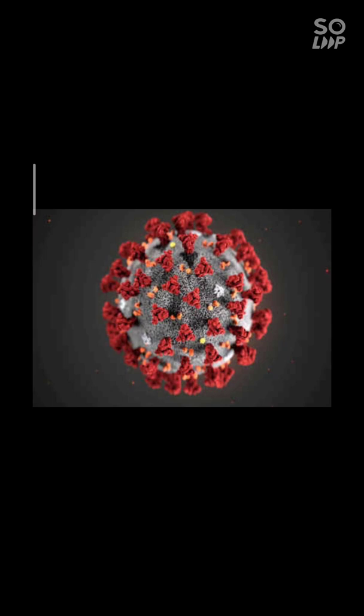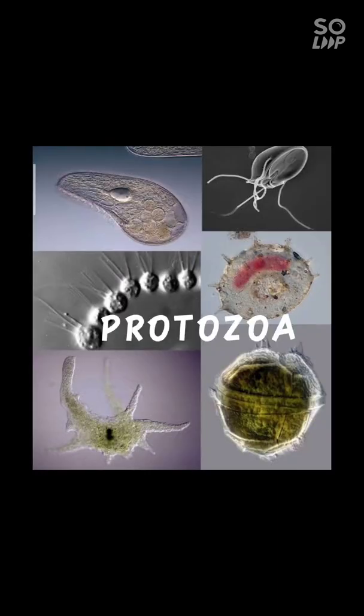Next, we will move on to protozoa. They are a group of single-celled microorganisms which are classified as animals. Protozoa are animal-like, just as algae are plant-like. They are found in ponds, lakes, dirty water drains, rivers, sea water, and damp soil. Some very common examples of protozoa are amoeba, paramecium, entamoeba, and plasmodium. Certain protozoa cause diseases — dysentery and malaria are caused by protozoa.